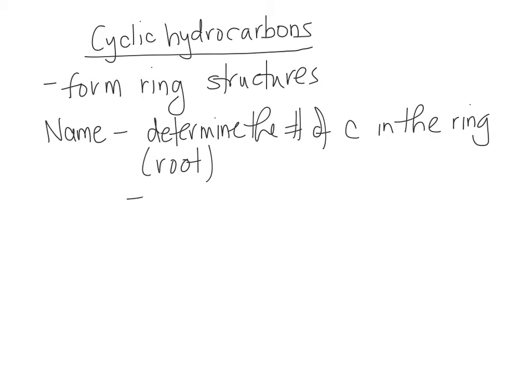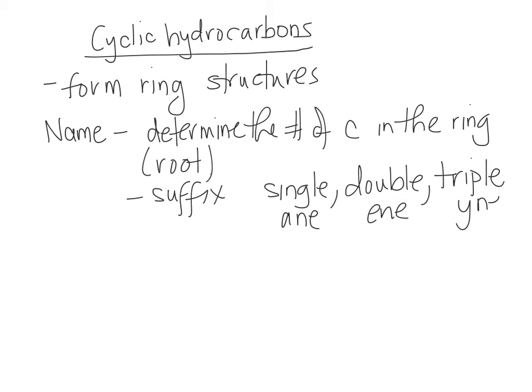What becomes your suffix depends on whether it's single, double, or in some cases triple bonds inside the ring. And the suffix then would be 'ane', 'ene', or 'yne'. You have to include the word 'cyclo' before the root. So it's cyclo, root, and then your suffix.